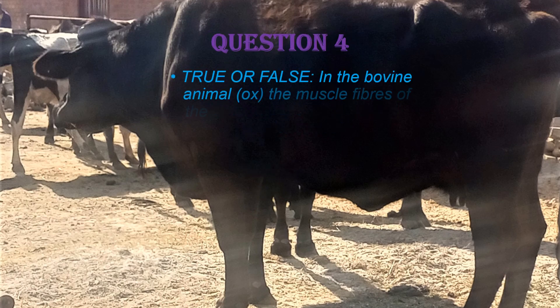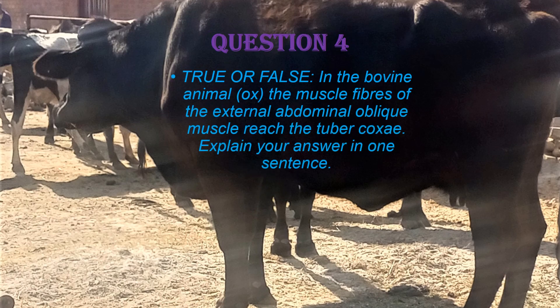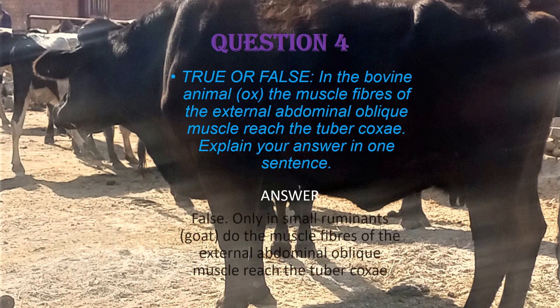Question 4. True or false? In the bovine animal or the ox, the muscle fibers of the external abdominal oblique muscle reach the tuber coxae. Explain your answer in one sentence. The answer is false. It is only in small ruminants — specifically the goat — where the muscle fibers of the external abdominal oblique muscles reach the tuber coxae, while in the ox the muscle reaches the tuber coxae via aponeurosis.